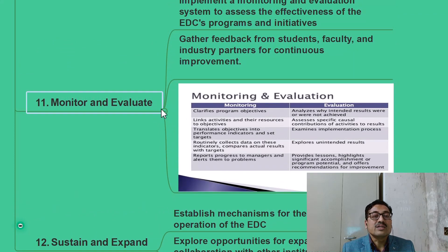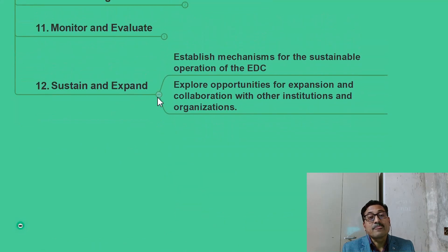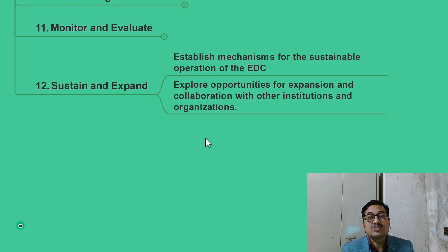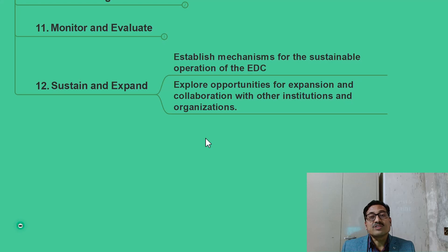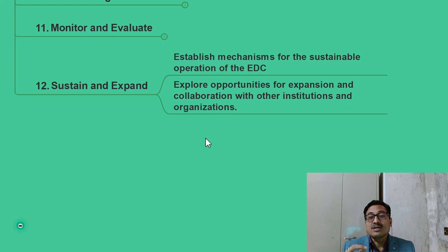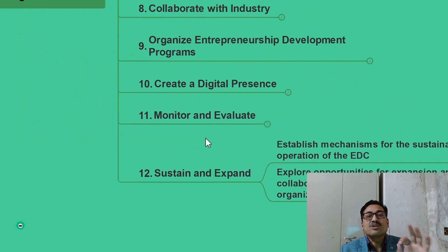Step number twelve is to establish mechanisms for the sustainable operation and expansion of your EDC. Your EDC should sustain, survive, and continue supporting the entrepreneurship journey for forthcoming generations. For that, you need a mechanism, a team, resources, templates, and checklists, and you should continuously explore opportunities for expansion and collaboration with other institutions and organizations.